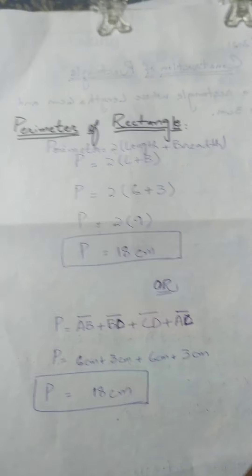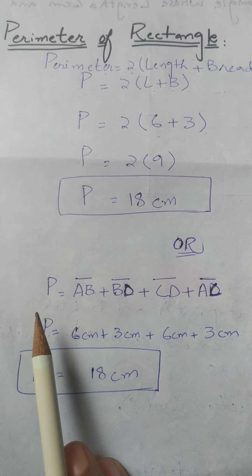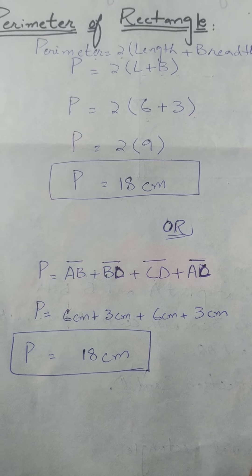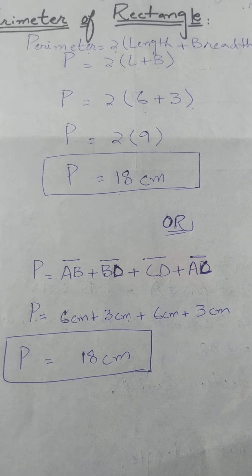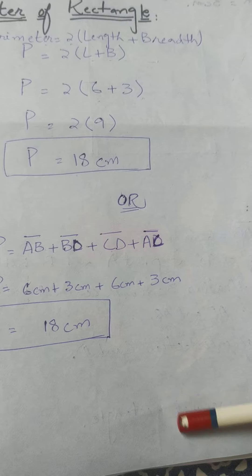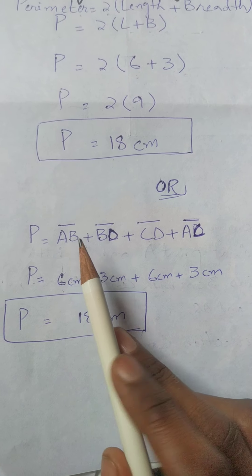In the beginning of this chapter, I told you that we can find the perimeter of any figure by adding all its sides. So without a formula, we can also find the perimeter of a rectangle by adding all four sides.